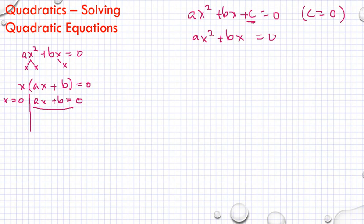Okay, let's take a look at some examples. For example, we have 3x squared plus 5x. As you can see, there is no constant.